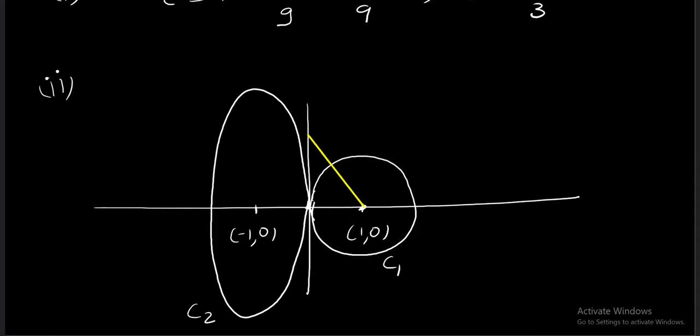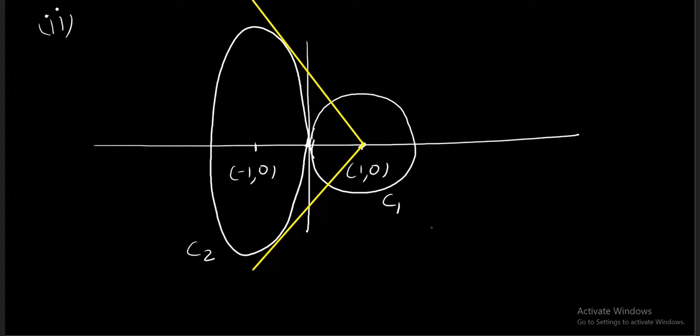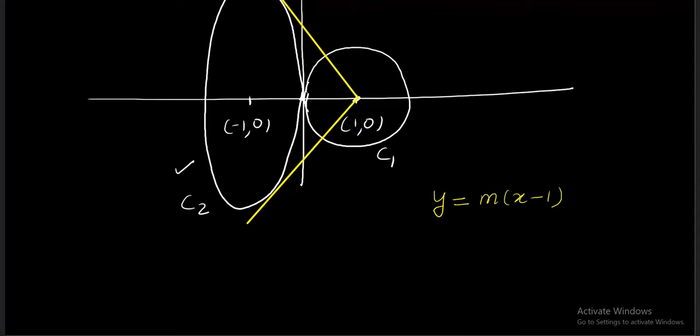So okay fine. From point 1,0 we need tangents. One tangent will be like this, the second tangent is going to be this one. These two tangents ke slopes ka product is going to be the answer to the question. So now what we will do - any line passing through 1,0 can be taken as y minus 0 equals m into x minus 1. So far I have just written a line passing through 1,0.